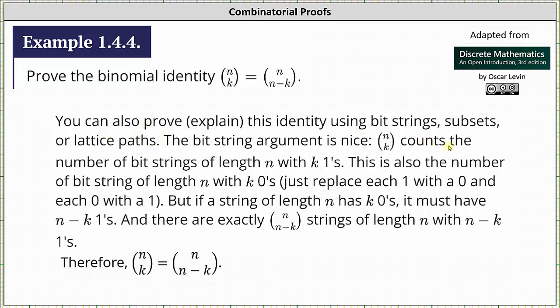n choose k counts the number of bit strings of length n with k ones. This is also the number of bit strings of length n with k zeros. Just replace each one with a zero and each zero with a one. But if a bit string of length n has k zeros, it must have n minus k ones. And there are exactly n choose n minus k strings of length n with n minus k ones.